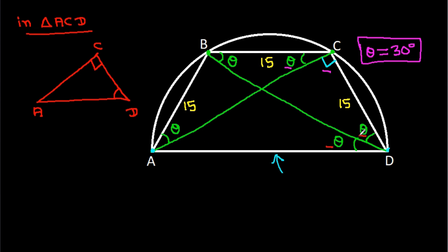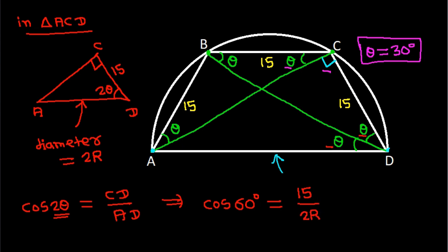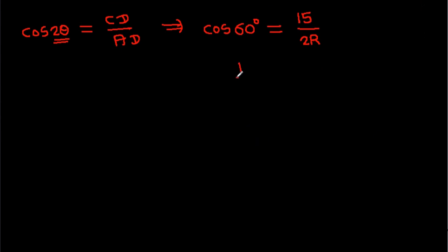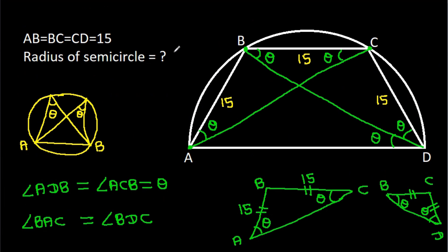This angle is 2 theta, which equals 60 degrees. And CD is 15, and AD is the diameter equal to 2 times the radius. So cos(60°) equals 15 divided by 2R. Since cos 60° is 1/2, we get 1/2 equals 15 over 2R, the 2s cancel, and R equals 15.